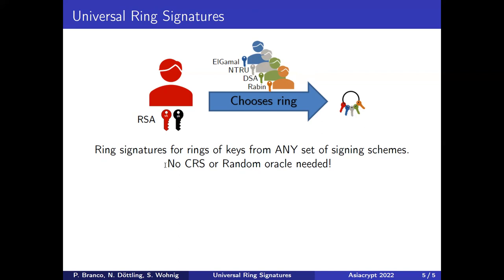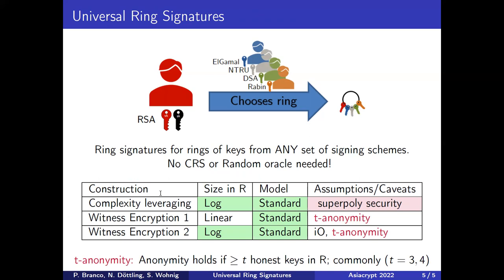We will explain more in the full talk. Our first construction uses complexity leveraging and requires super-polynomial security for the underlying signatures, which is not truly universal. We fix this in our next two constructions, which are based on witness encryption. The first achieves only linear size, and the second builds a special witness encryption using IO to get logarithmic size, but we do need IO.